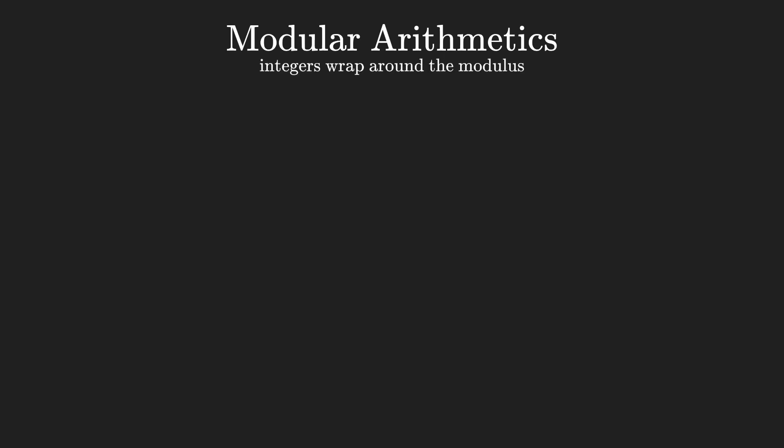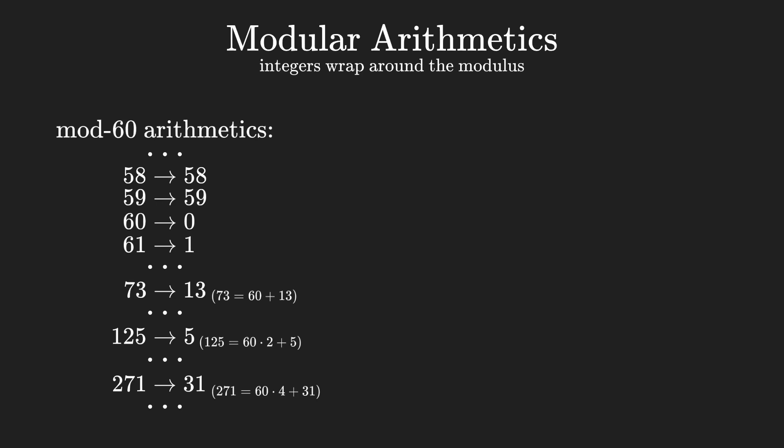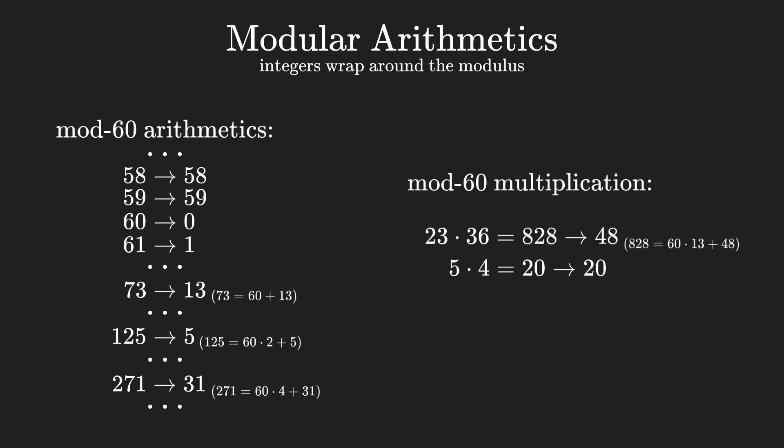Let's briefly touch on modular arithmetics, in order to explain an operation needed to qualitatively understand how the quantum part of Shor's algorithm works. Under modular arithmetics, values essentially wrap around a certain integer known as the modulus. For example, under modulo 60 arithmetic, the value of 61 is actually 1, and the value of 73 is actually 13. The overall idea is to wrap any value greater or equal to the modulus. I intentionally used 60 as an example, since it is behind the modular arithmetic we use for minutes and seconds. The operation we care about is modular multiplication, consisting of regular multiplications whose result is wrapped around the modulus. I will indicate it with a circle and the modulus.